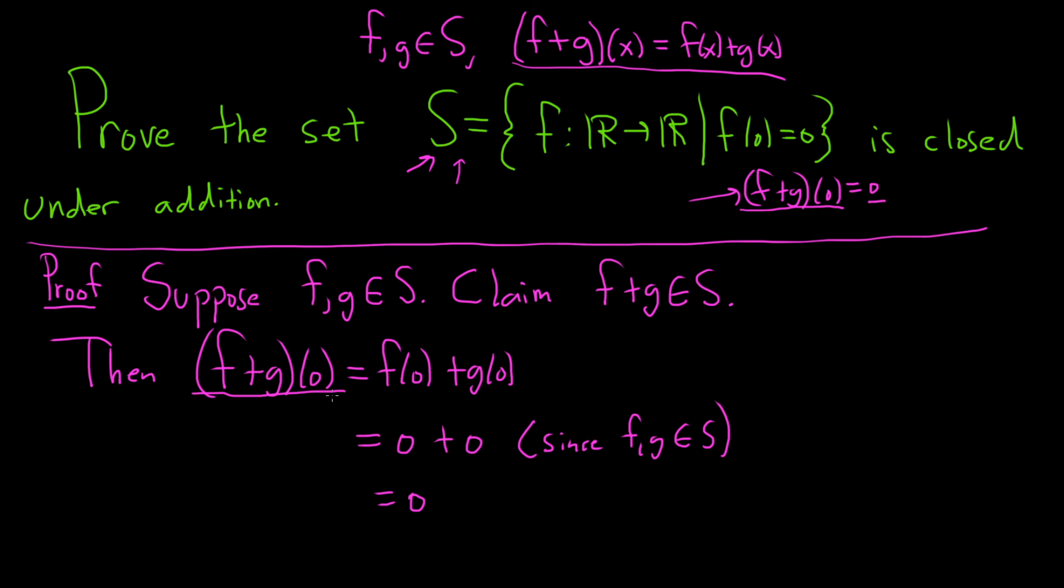So we have f plus g of 0 equal to 0. This is precisely what it means for f plus g to be in S. So f plus g is also an element in S. And so we've shown that S is closed under the operation of addition. We took two elements, f and g in S, and we showed that the sum is also in S. And that completes the proof. I hope this video has been helpful.